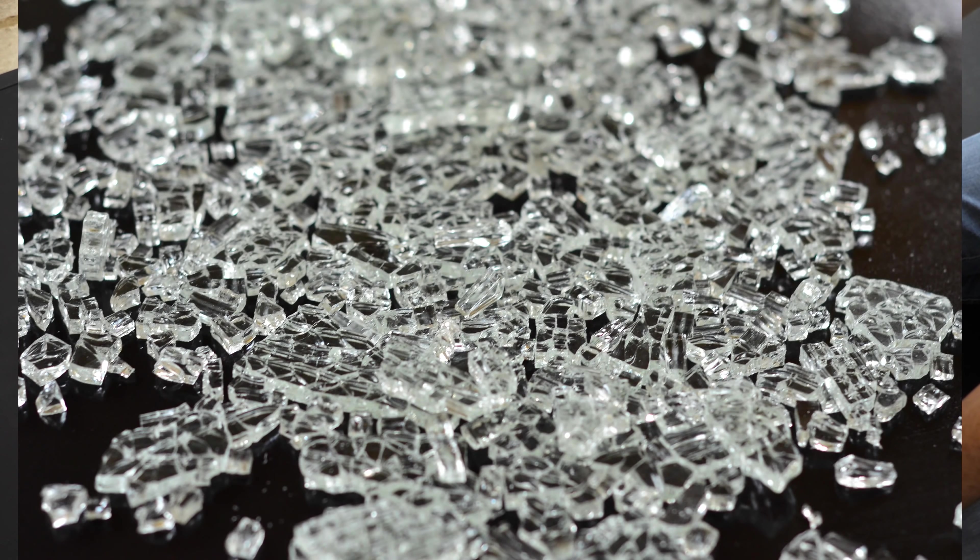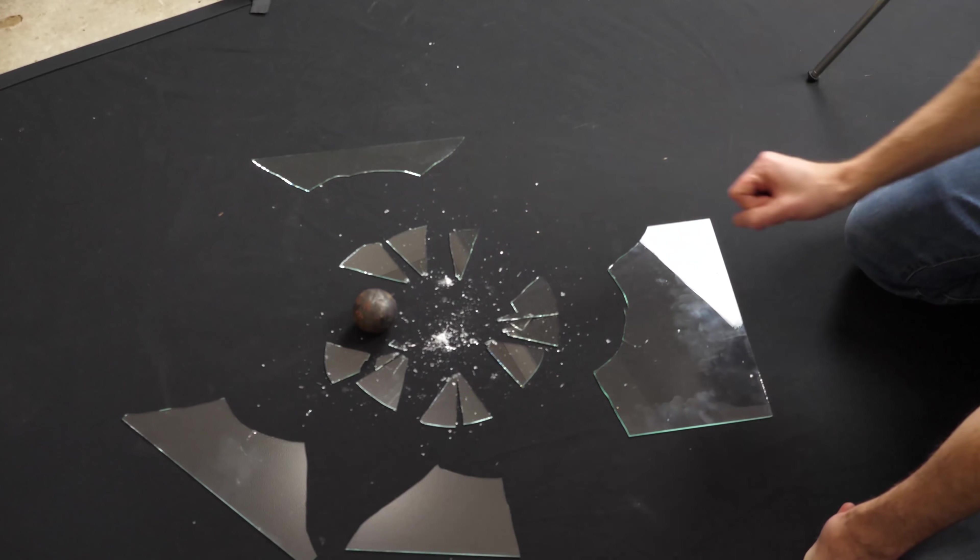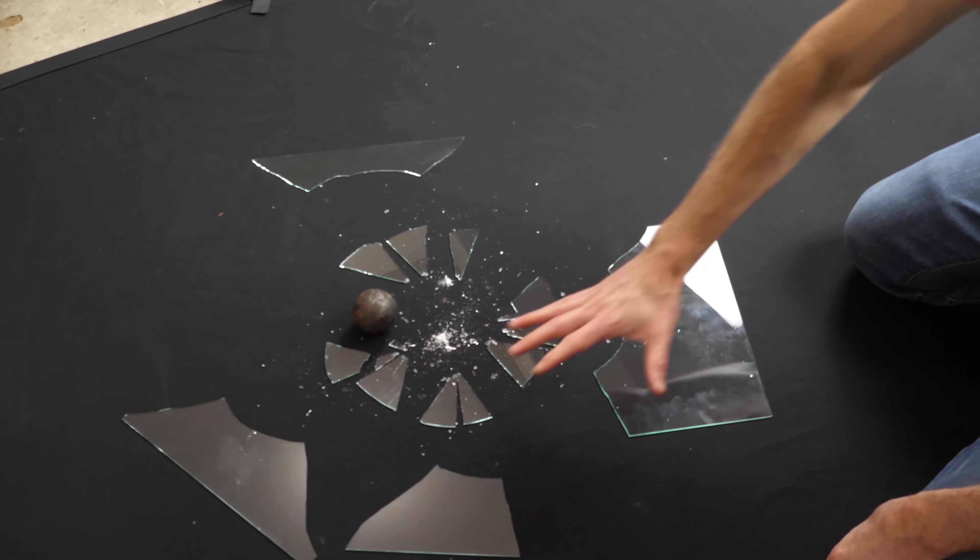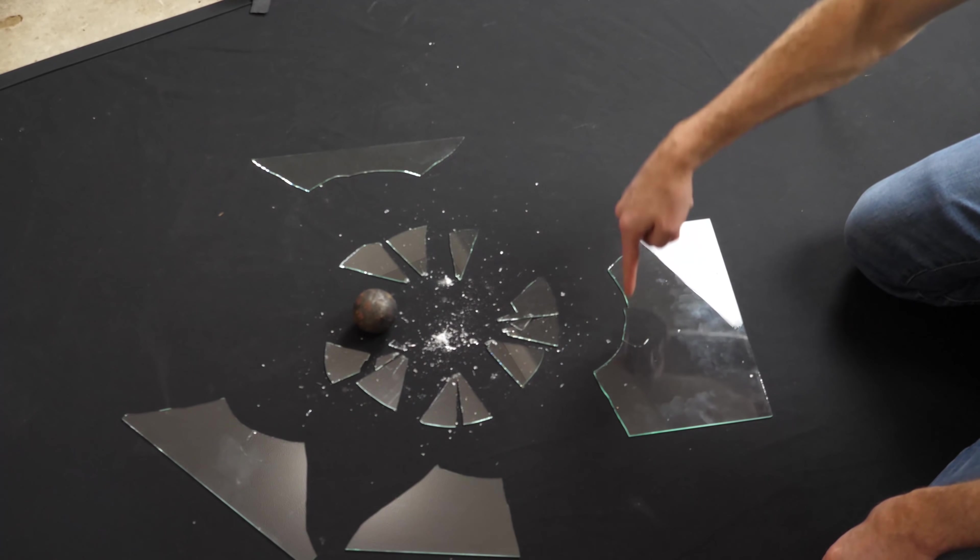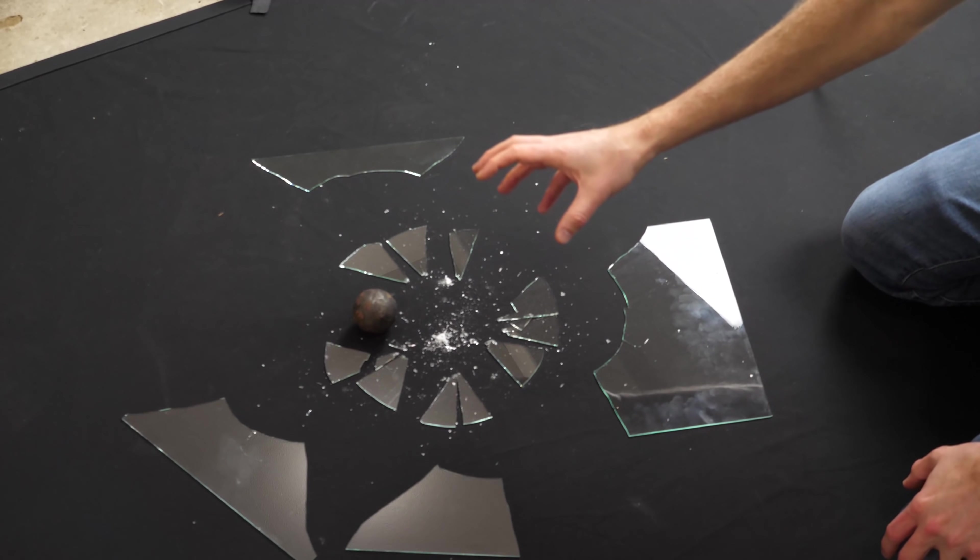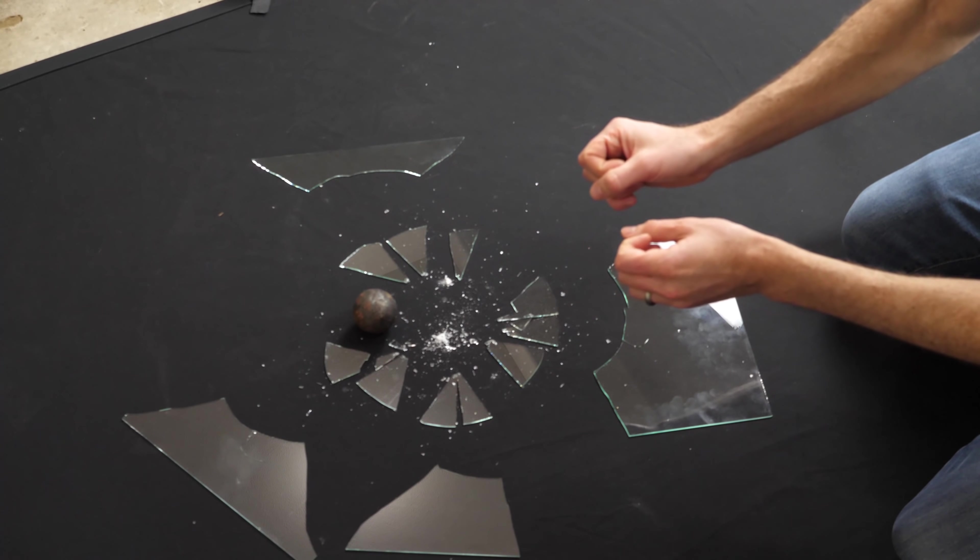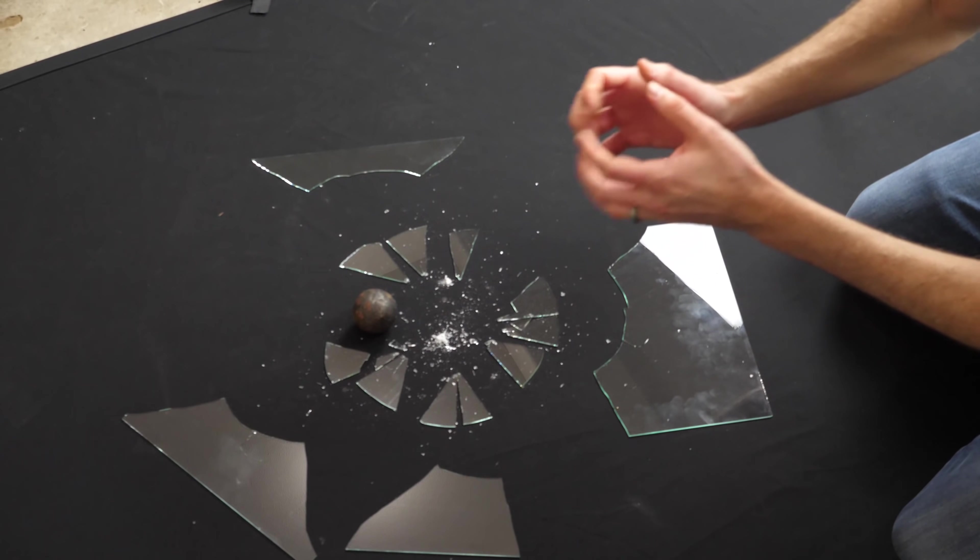Tempered glass tends to break in small little tiny individual square pieces or rectangular pieces. So there's a ton of cracks in the surface area. Whereas in this pane of glass, there's only a few cracks through the whole thing. And that's because tempered glass is formed so that the surface of it is under compression. And so when it breaks, it has a lot of energy to release. And that energy forms more cracks.